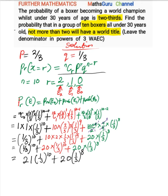We factor out (1/3)^8, which is common to both terms — the lowest power. So we have (1/3)^8 times: 21 times (1/3)^10 divided by (1/3)^8, which leaves 21 times (1/3)^2, plus 20 times (1/3)^8 divided by (1/3)^8, which gives 20.